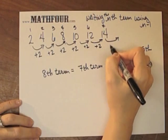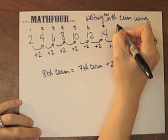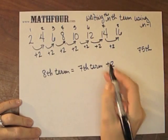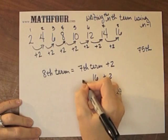So I'm going to take the 7th term, add 2, and there's my 8th term. So my 8th term is the 7th term, 16 plus 2, which gives me 15.